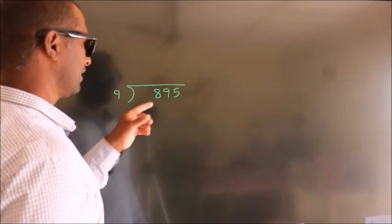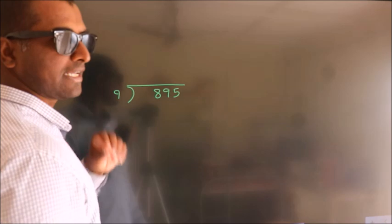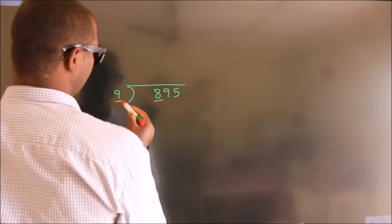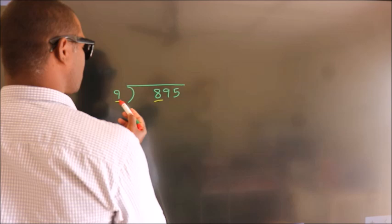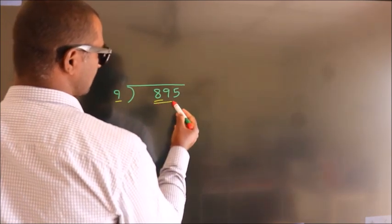How to divide 895 by 9? See, here we have 8, here 9, 8 smaller than 9. So we should take two numbers, 89.